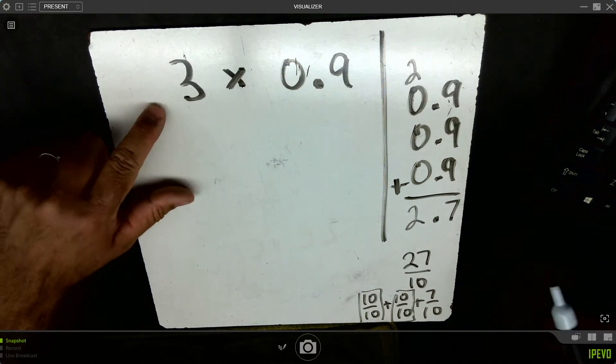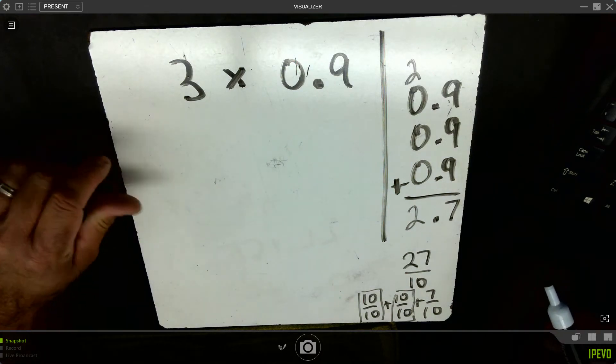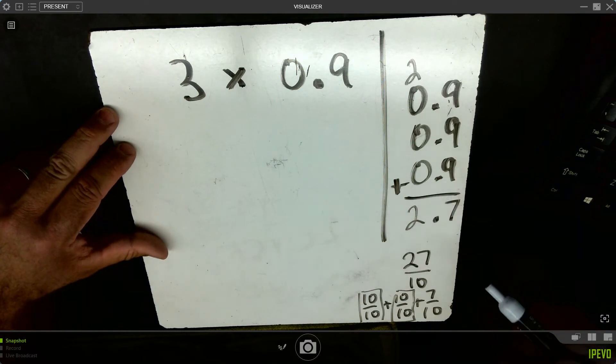We just showed how to multiply 3 times 9 tenths using addition. Now let's go ahead and do this with multiplication.